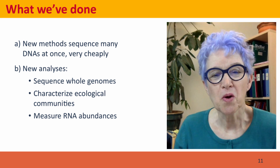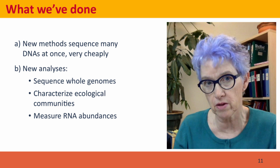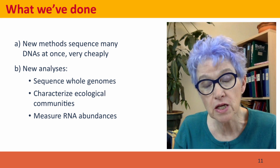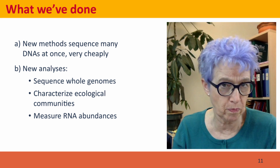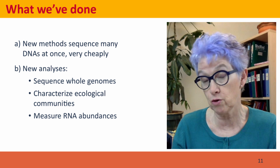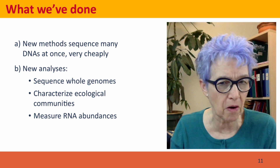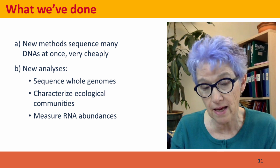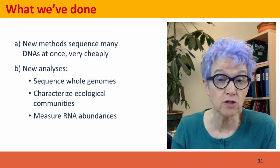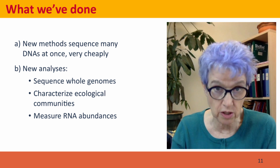So we've talked about how the new methods of DNA sequencing can sequence many DNAs at once rather than just a single molecule, and they can do it far less expensively than the old methods. This enables very efficient DNA sequencing to be applied to new problems. We can sequence whole genomes much more easily than when we first sequenced the human genome; we can characterize the genetic membership of ecological communities just by sequencing the DNA without actually knowing what the organisms are; and we can use DNA sequencing to measure the abundance of RNA in a sample, which tells us how strongly different genes are expressed in different tissues.